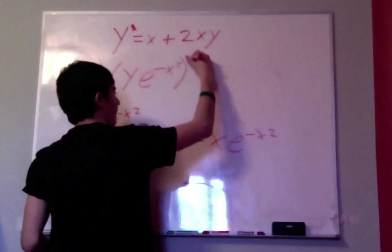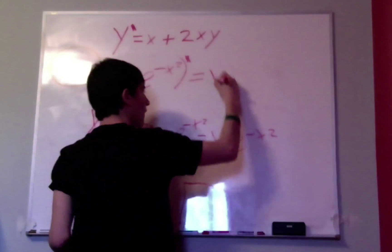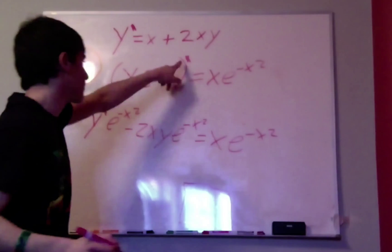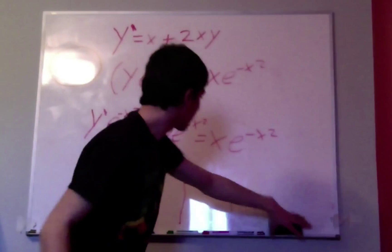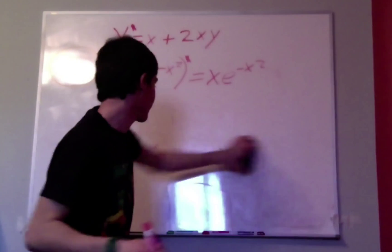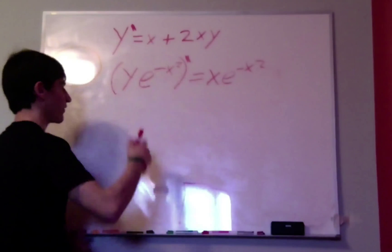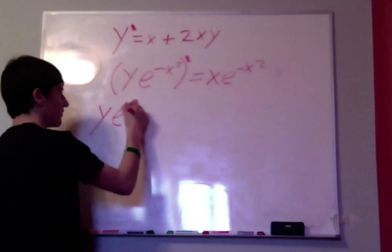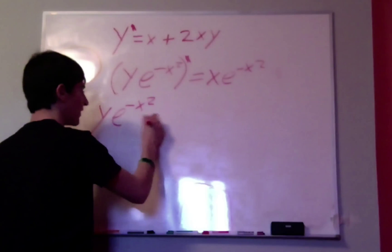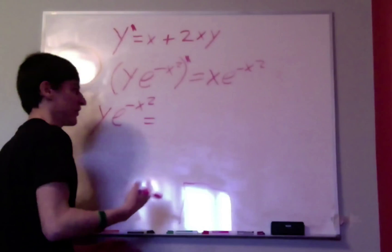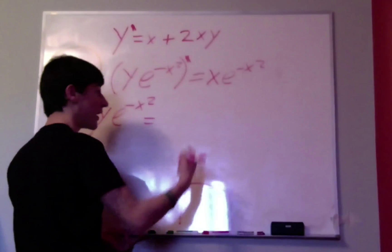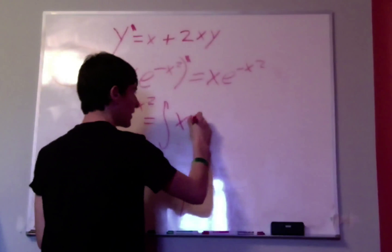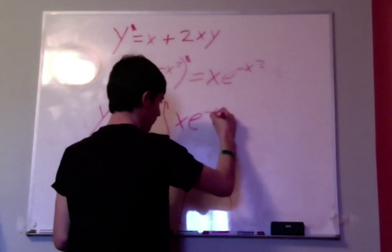The derivative of that is equal to x times e to the negative x squared — and here I mean prime, I don't mean to the y. Now we're going to integrate both sides. The integral of the derivative is just the thing itself, so we can cancel that out. We get y times e to the negative x squared is equal to the integral of x e to the negative x squared dx, and we'll get a constant on that side.